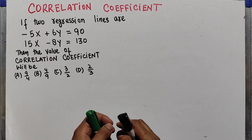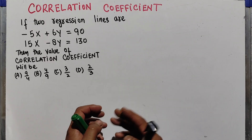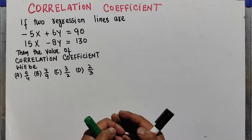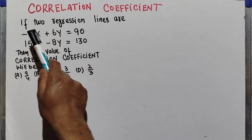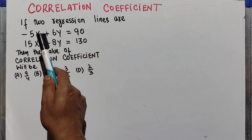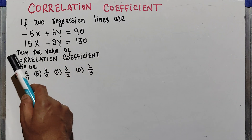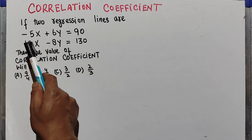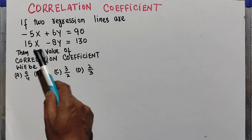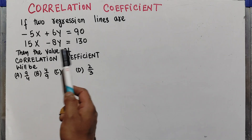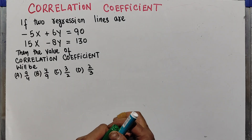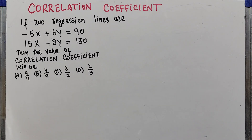In this video we will learn how to find the correlation coefficient from the given regression lines. The question is: if two regression lines are minus 5x plus 6y equals 90, and 15x minus 8y equals 130, then find the value of the correlation coefficient. Options are given and we need to find the correct one.